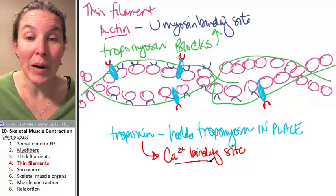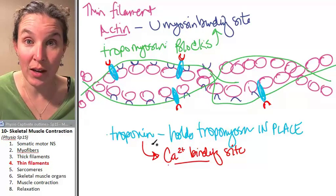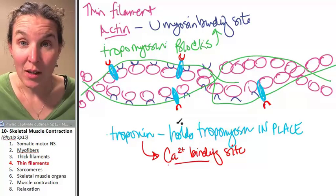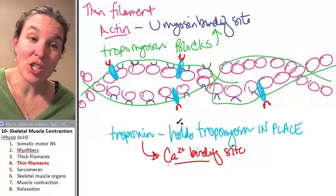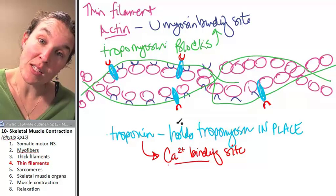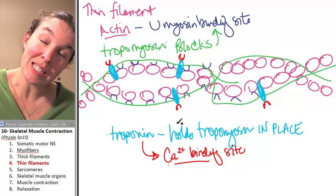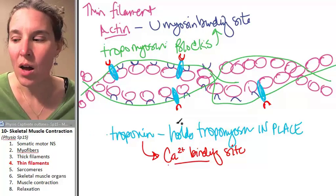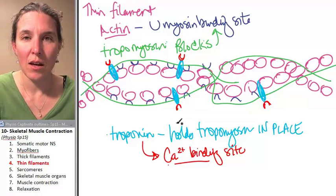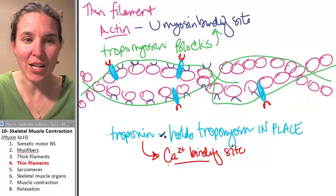If calcium binds to troponin at the calcium binding site, troponin will change shape. And if troponin changes shape, it can no longer hold tropomyosin in position to cover the myosin binding sites. And now actin's myosin binding sites are revealed. The truth is revealed and action can happen.